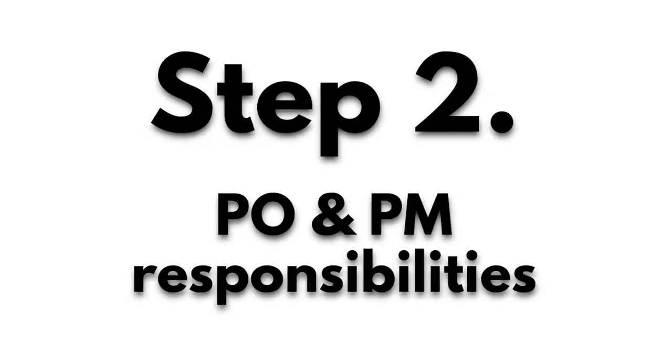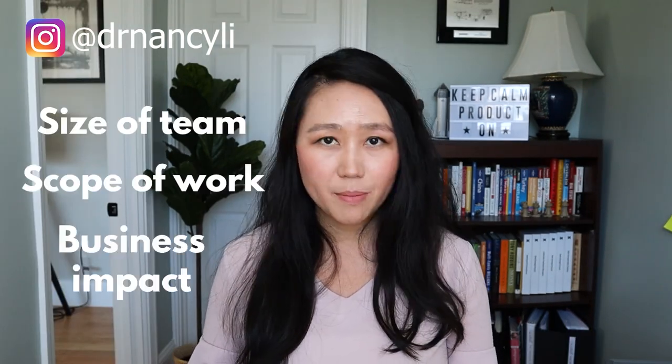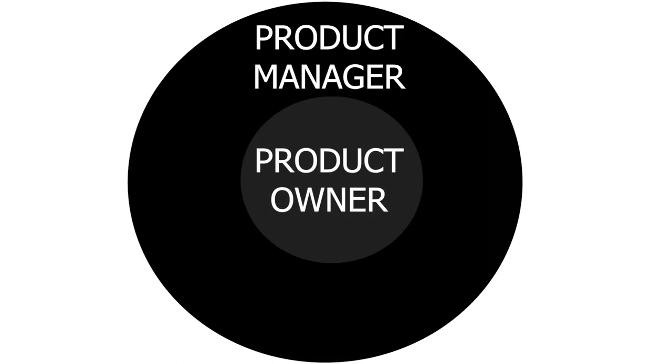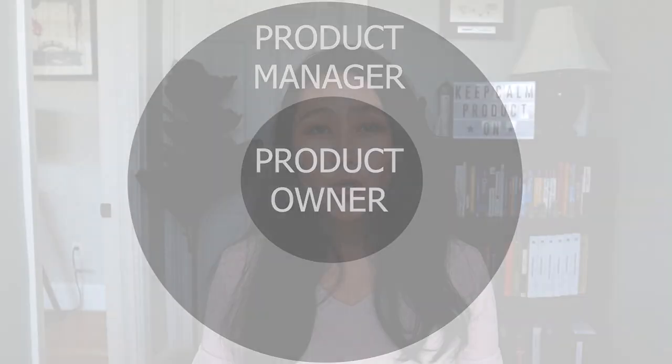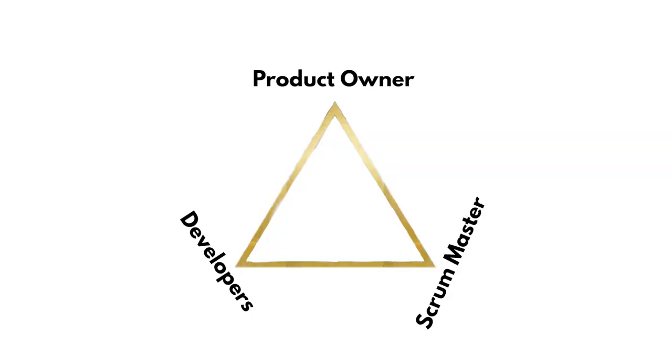In general, a product manager has a bigger scope of responsibilities. The differences are mainly in three aspects: the size of the team, the scope of work, and the business impact. Product owner is a term invented in the agile product development process. In the agile process, there are three key people: the product owner, the scrum master, and the developers — they form the golden triangle, and their relationships are very critical.